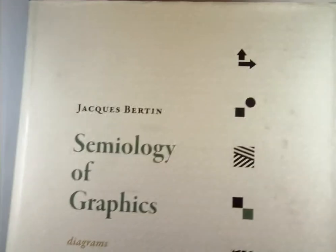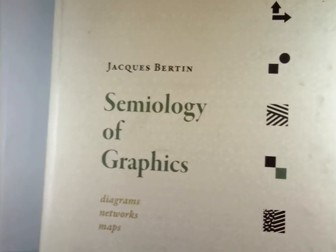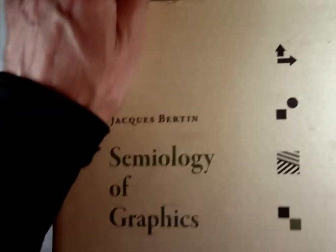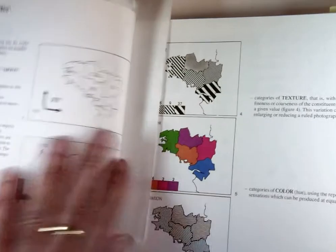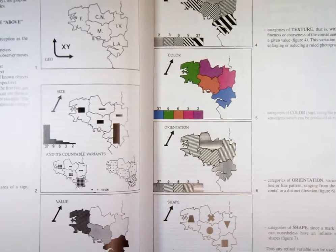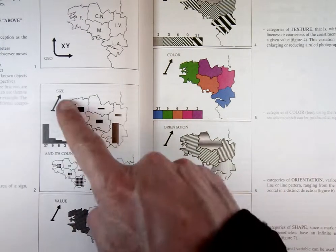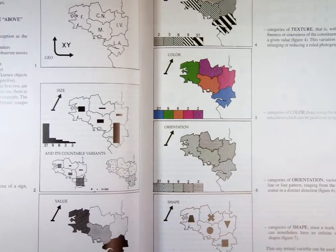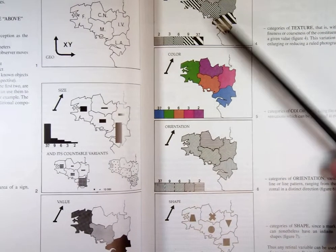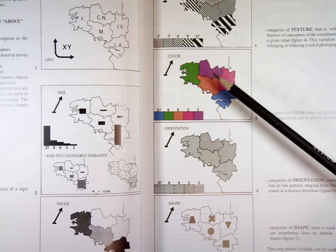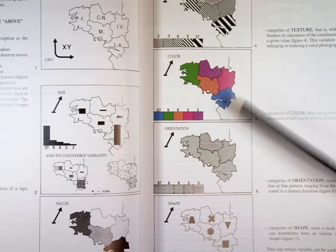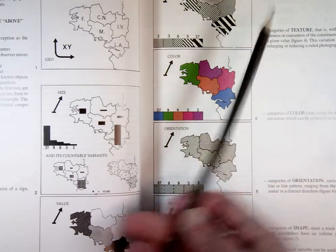Last week I talked about this guy Jacques Bertin, who was a cartographer who came up with these so-called retinal variables that you can use to differentiate your graphs. I'm going to go through the list again because I actually failed to mention a very important variable. So the seven different variables are: size — you can differentiate by size or area; value — different grays, darker or lighter; texture — not used so much anymore but used a lot before computers, still used in cartography; color; and orientation — the different orientations that your texture might have.